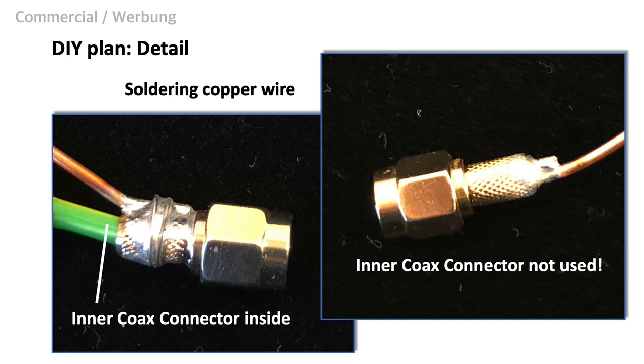On the right plug, we solder the copper ring to the outer coax conductor only. The inner coax conductor is not used here. We don't even mount it into the plug.